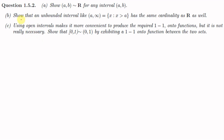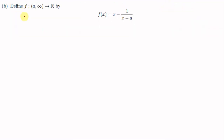We now move to Part B: show that the unbounded interval (a,∞) = {x : x > a} has the same cardinality as ℝ, i.e., (a,∞) is similar to ℝ. We need to exhibit a one-to-one onto function from (a,∞) to ℝ. We define f from (a,∞) to ℝ by f(x) = x - 1/(x-a).